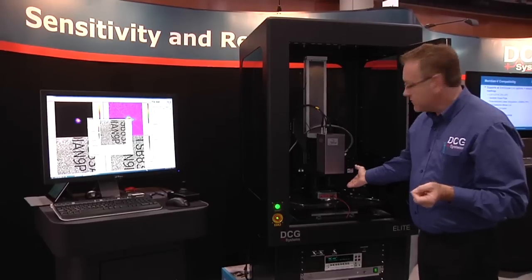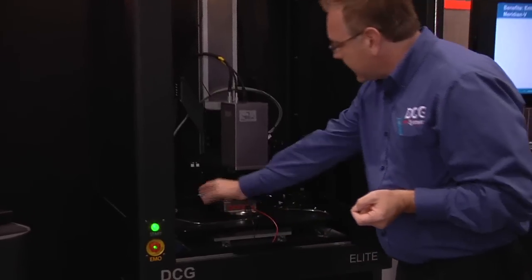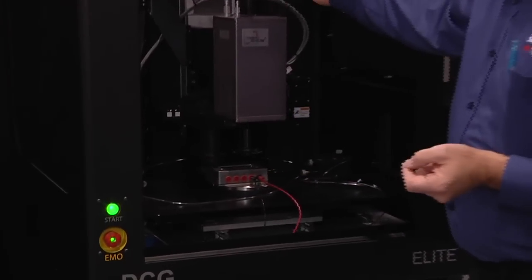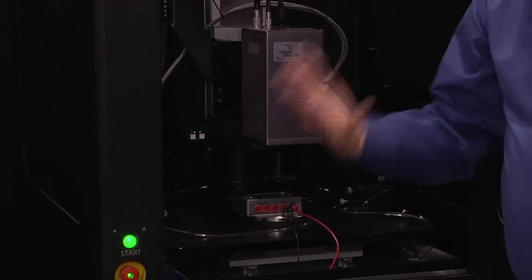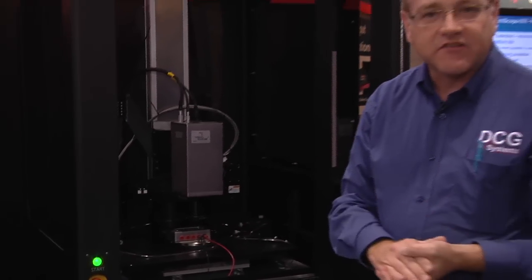An example here is a simple package type of probing system that has an X, Y movement, and also has a motorized lens to it. So you can easily navigate land probes and be able to do your analysis quickly.